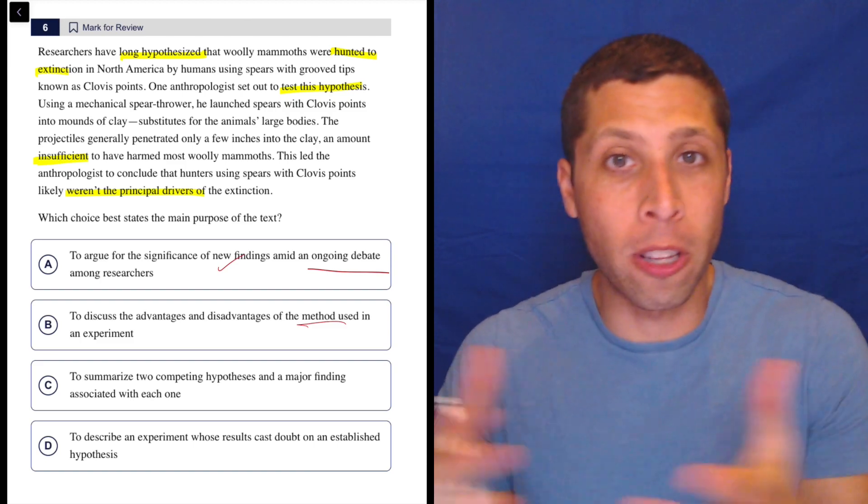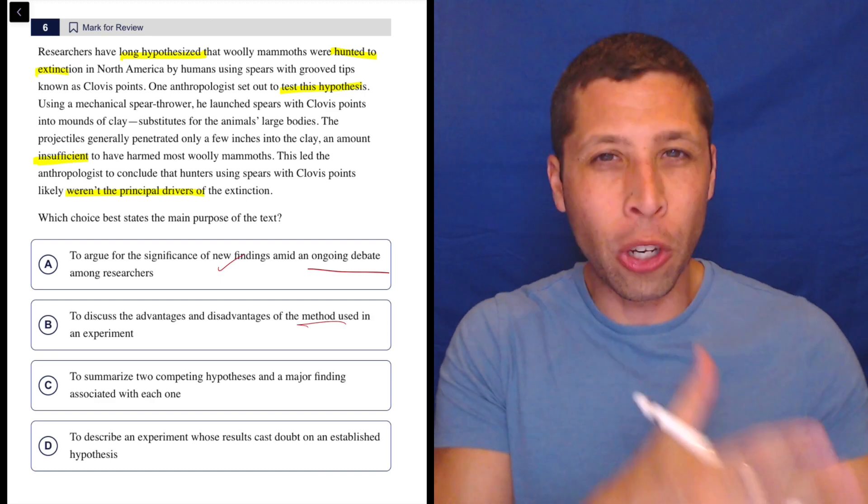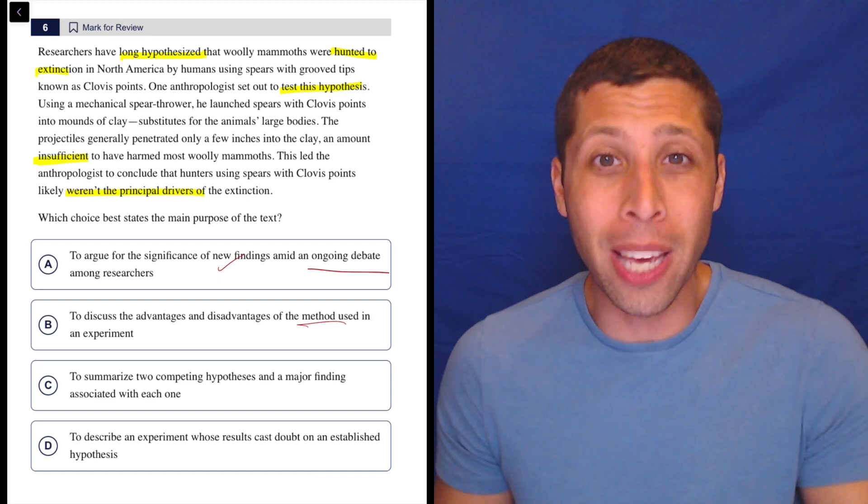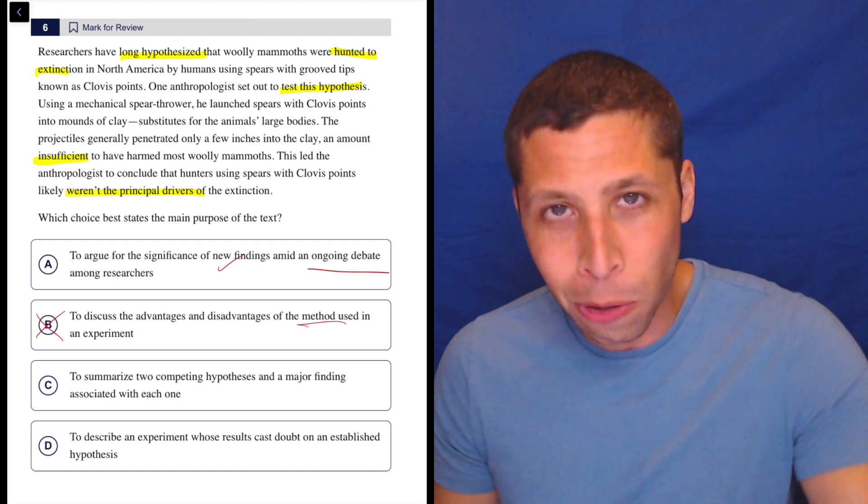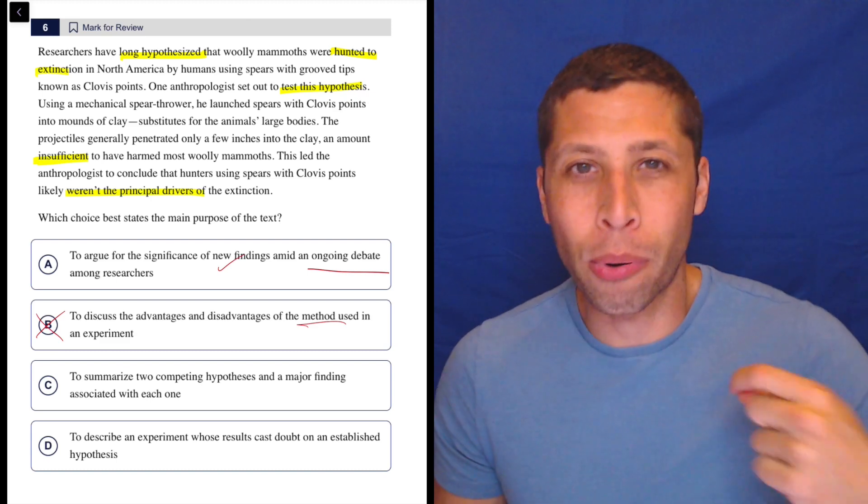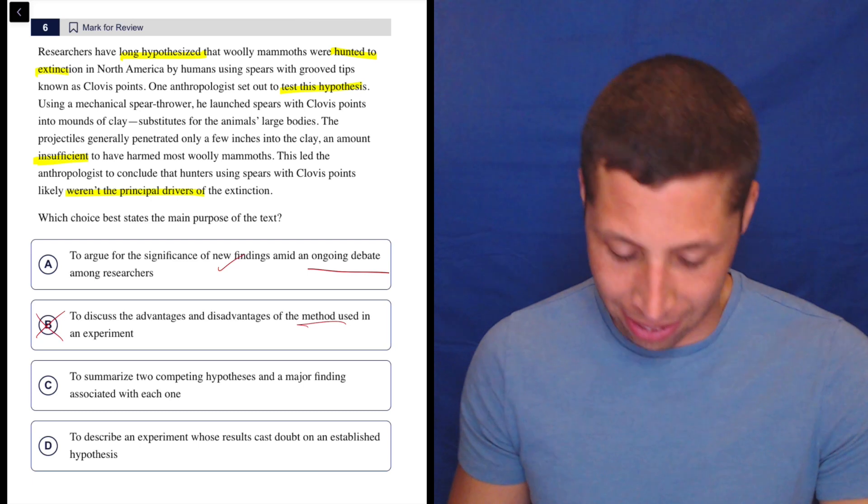And this is kind of why that choice is wrong. They're not saying the method was good or the method was bad. This experiment was good or flawed or whatever. Sometimes we do get that in passages, but that's not what's going on here. It's about the conclusion of the experiment, not the process of the experiment.